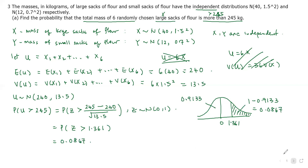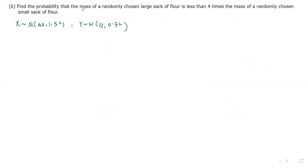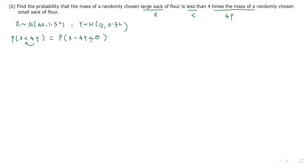For part B, we need to find the probability that the mass of a chosen large sack X is less than 4 times the mass of a randomly chosen small sack: P(X < 4Y). We bring the 4Y over to get P(X − 4Y < 0), and we denote W = X − 4Y.